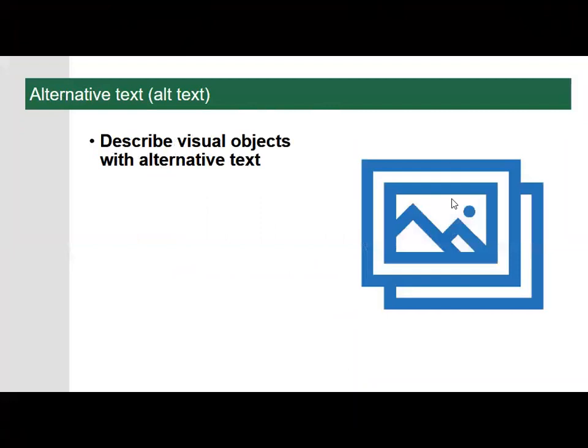All visual content in your Word documents, Excel spreadsheets, Outlook emails, and PowerPoint presentations should have alt text. This includes pictures, clip art, SmartArt graphics, shapes, groups, charts, embedded objects, ink, and videos — anything visual. Alternative text helps users understand what's important in images and other visuals. Screen readers speak the alternative text in place of images, allowing the content and function of the image to be accessible to those with visual or certain cognitive disabilities.